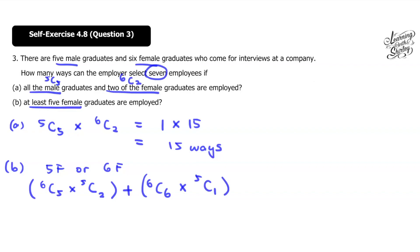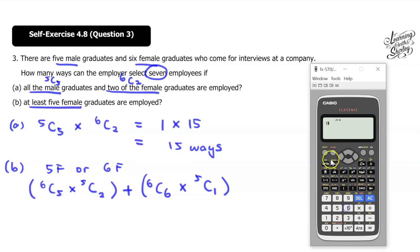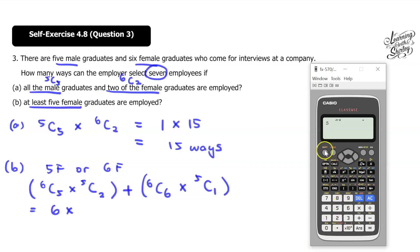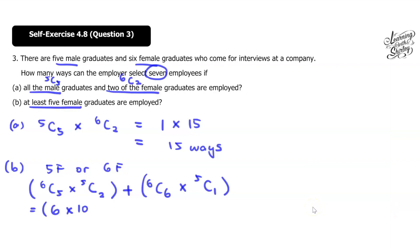Let's calculate this. So 6C5 is equals to 6. And then 5C2. So 5C2 is equals to 10. Then plus. So 6C6 is 1. And then 5C1 is 5. So here we have 60. Then plus 5 is 65 ways. And this is the answer.